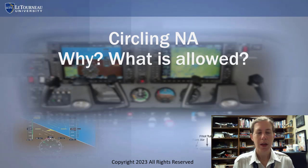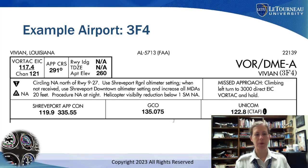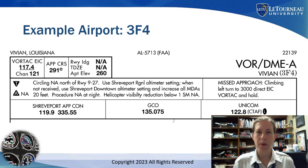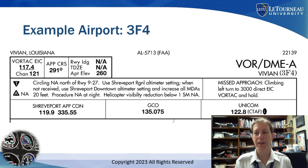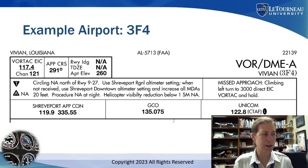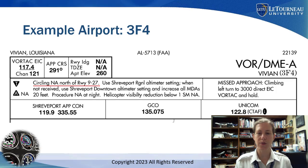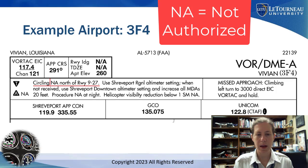Let's start off with a good example at an airport that I frequently fly into: Vivian, Louisiana. Here we have an approach header chart — this is the VOR DME alpha — and we can see on the chart it clearly says circling N-A north of runway 927. N-A means circling is not authorized.